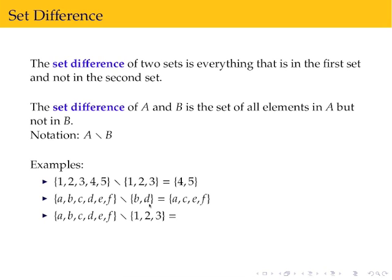And if I have A, B, C, D, E, F and I take away 1, 2, 3, notice these things weren't in there to begin with, but we can still answer this question. We have A, B, C, D, E, F.